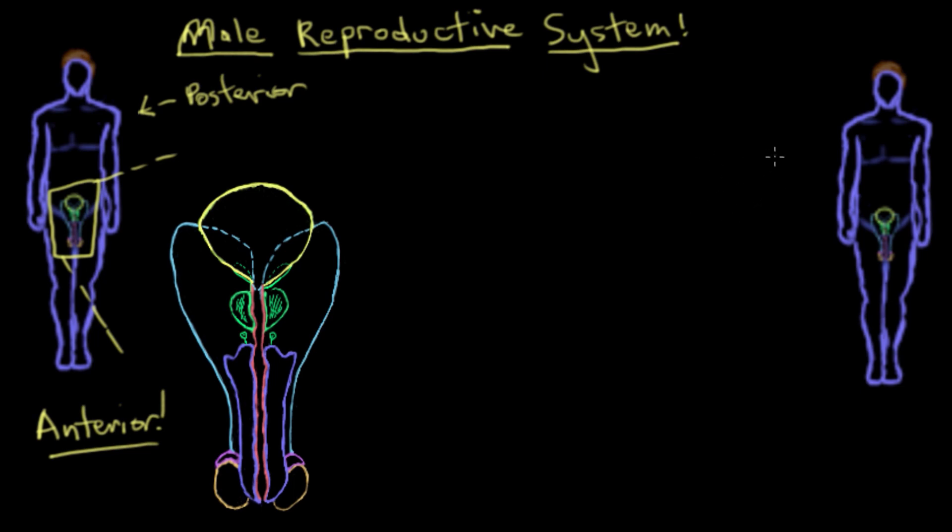What a sagittal view is - let's look at this guy over here. This is his left side, because this is where his left hand is, and this is his right side. In a sagittal view, you sort of make a cut right down the middle here.